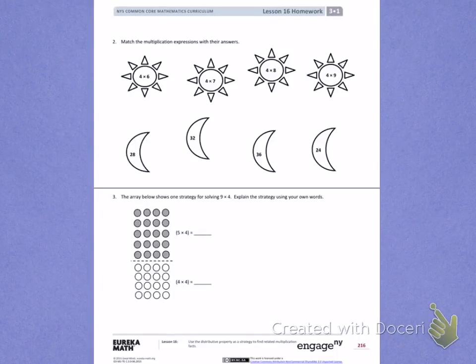This is Module 1, Lesson 16. Today's objective was to use the distributive property as a strategy to find related multiplication facts.